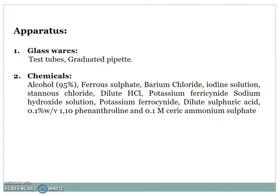Apparatus used for the practical: glassware — test tubes and graduated pipette. Chemicals: 95% alcohol, ferrous sulfate, barium chloride, iodine solution, stannous chloride, dilute HCl, potassium ferricyanide, sodium hydroxide solution, dilute sulfuric acid, 0.1% w/v of 1,10-phenanthroline, and 0.1 molar ceric ammonium sulfate.